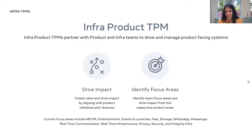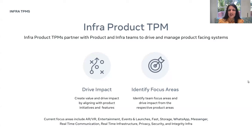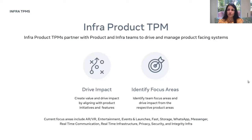The Infra Product TPM is an interesting blend — they partner with both product and infra teams to drive and manage product-facing systems. They drive impact and identify focus areas. Current focus areas include augmented reality, virtual reality, events and launches, WhatsApp, Messenger, real-time infrastructure, privacy, security, and integrity infra. As a product TPM you interact with product teams; as an infra TPM it's more towards the backbone and network — infra product TPMs sit at that intersection.